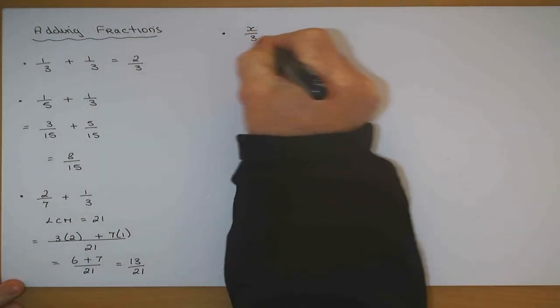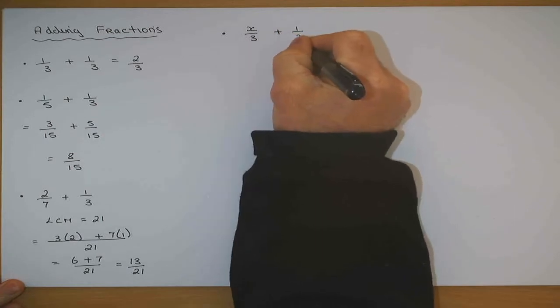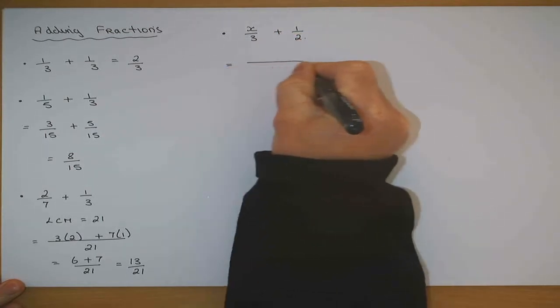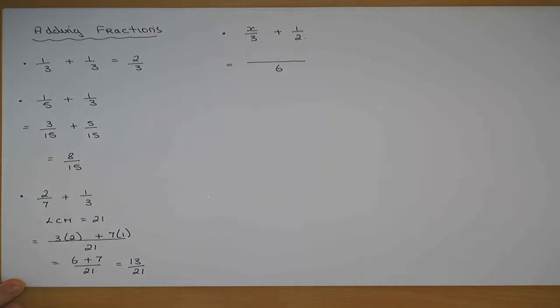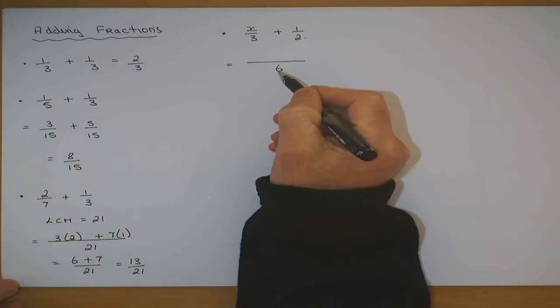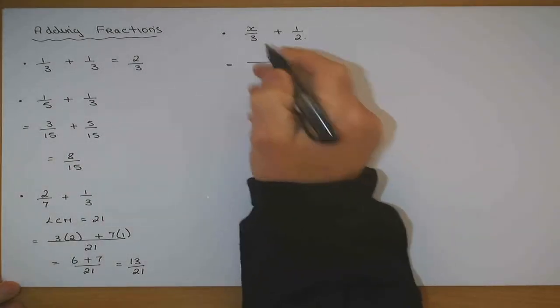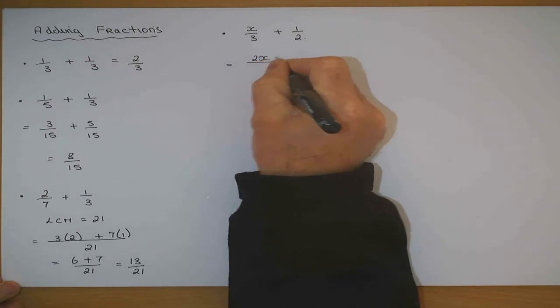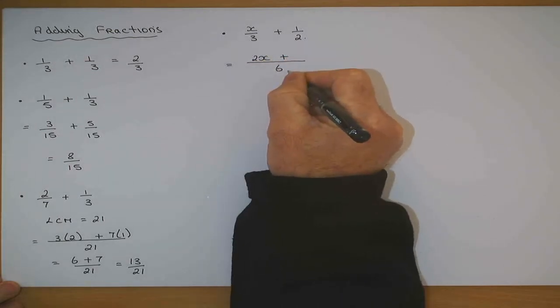X over three, plus one over two. To add them, it has to all go over six.